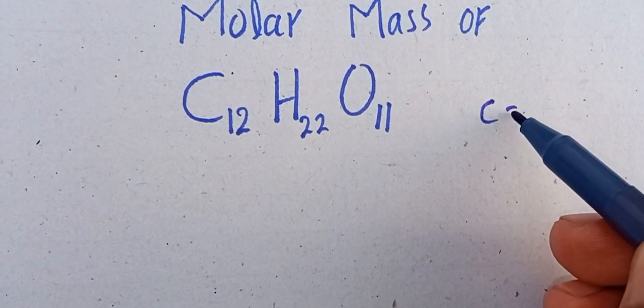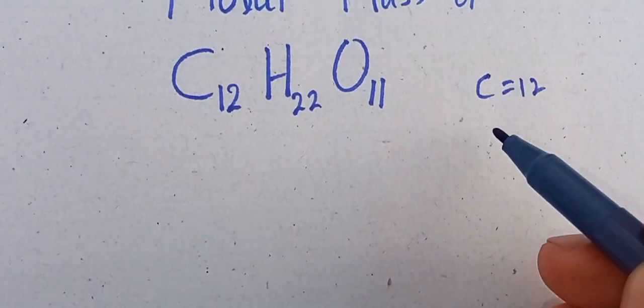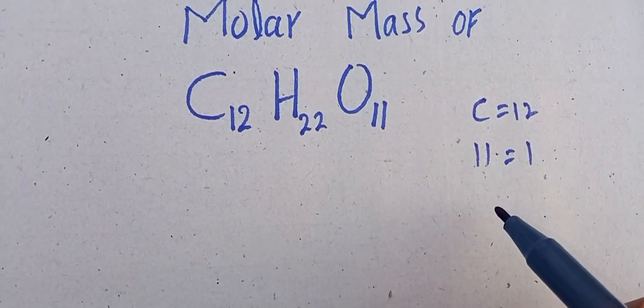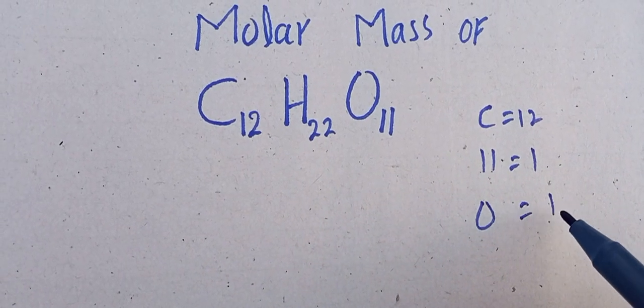The atomic mass of carbon is 12 grams per mole, hydrogen is 1.008 grams per mole, and oxygen is 16 grams per mole.